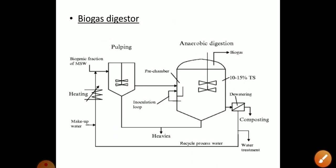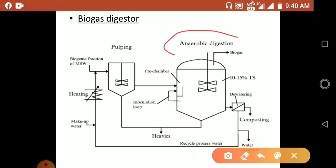Now, what is a biogas digester? This is a figure of a biogas digester. The anaerobic digestion process takes place in the biogas digesters. This is the pre-chamber where the anaerobic digestion takes place, and finally the biogas is obtained.